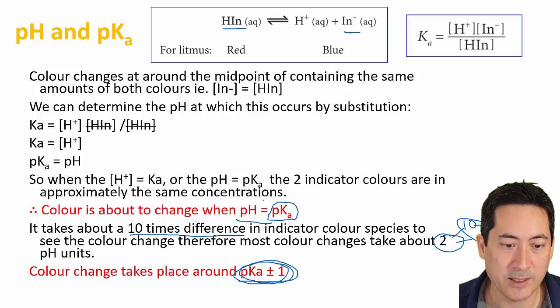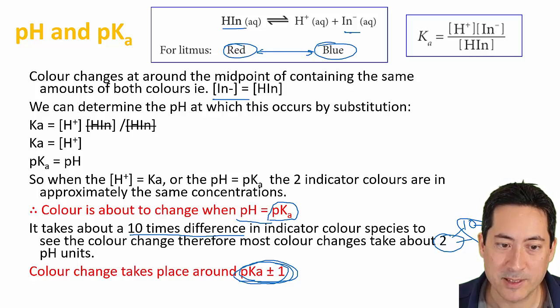When the pH equals the pKa, we have a situation where we're really looking for when there is about half and half—half red, half blue. That is the point where we're going to start to be able to detect a change from red to blue or blue to red. That midpoint is when these concentrations are equal.